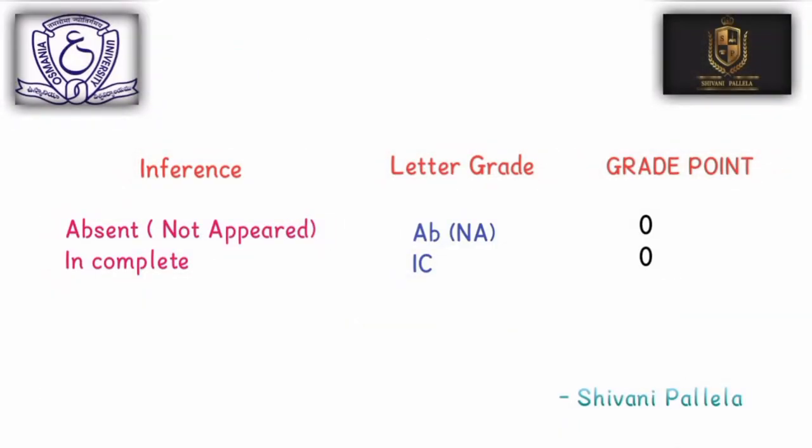If you are absent for the examination, it is marked as ABN — meaning 'Not Appeared.' If you are absent, you will not be promoted to the next semester. Examination incomplete means that you have missing student-related documents required for the exam.